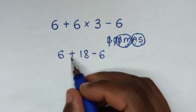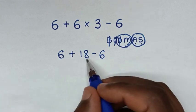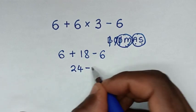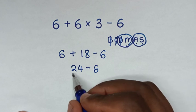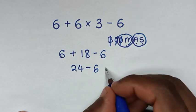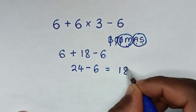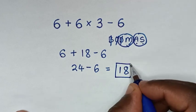So we deal with this addition of 6 plus 18, it is 24, then minus 6. Now we are left with subtraction. 24 minus 6 is equal to 18. So this is our final answer.